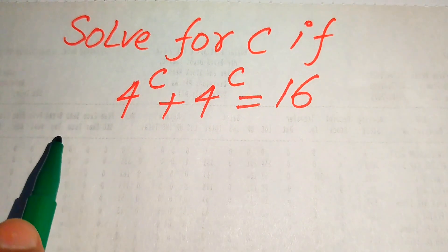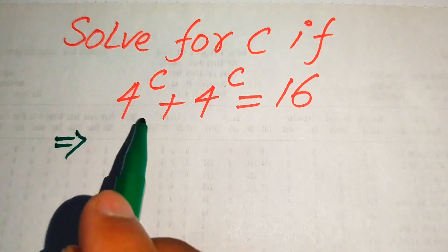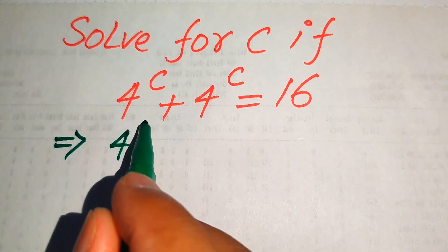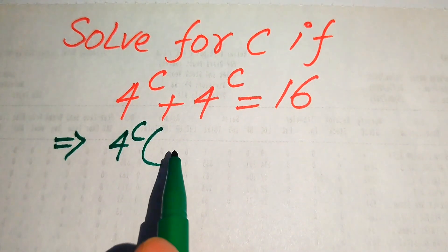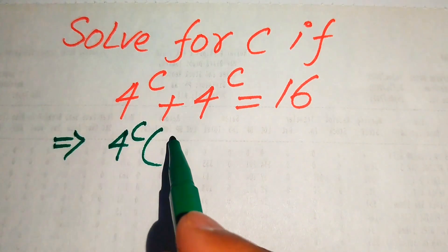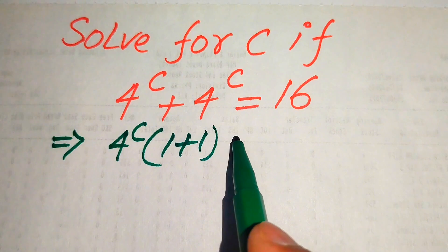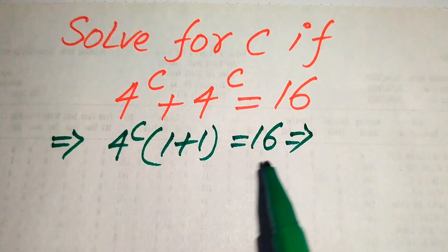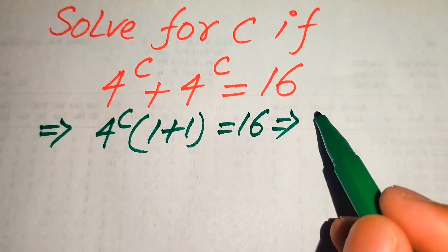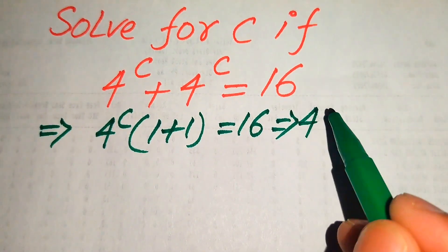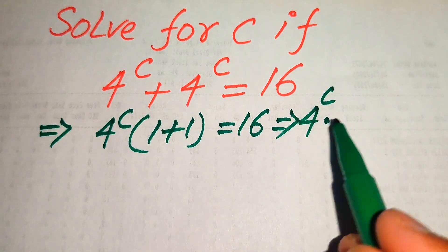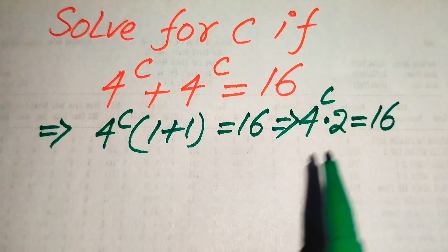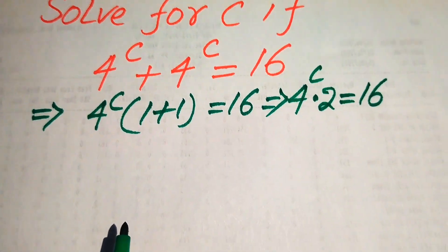Now, 4 to the power of c is the common term, so when you take 4 to the power of c as common, the remaining values give us 1 plus 1, which equals 16. This equation implies that 4 to the power of c, multiplied by 1 plus 1, which equals 2, and this whole equation equals 16.